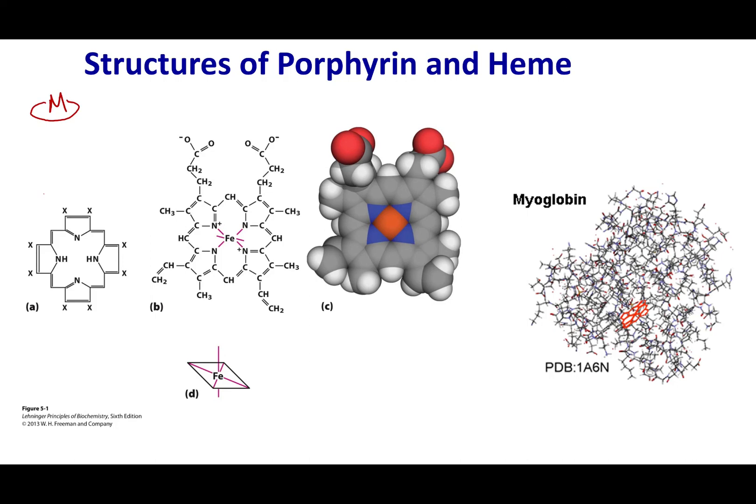So if that metal that sits in there happens to be a magnesium and these X's represent the variable structures we find in nature, what you guys will make is chlorophyll. If on the other hand, if that metal happens to be iron and those X's happen to be different kinds of biological structures, what you can get is this structure right here called heme.